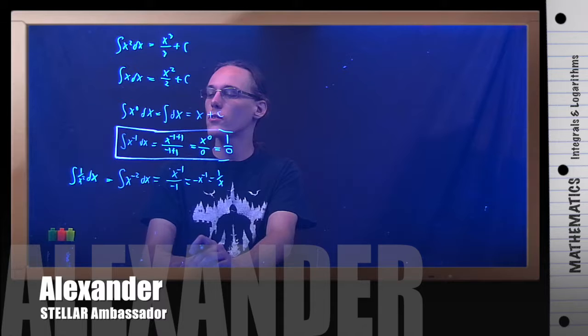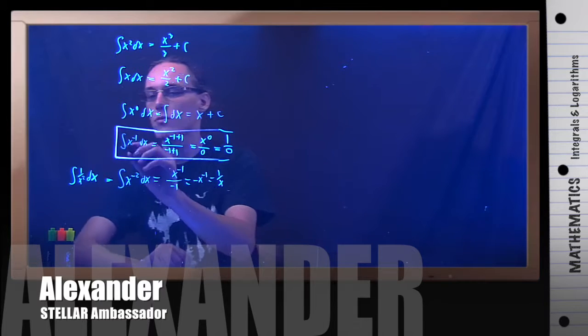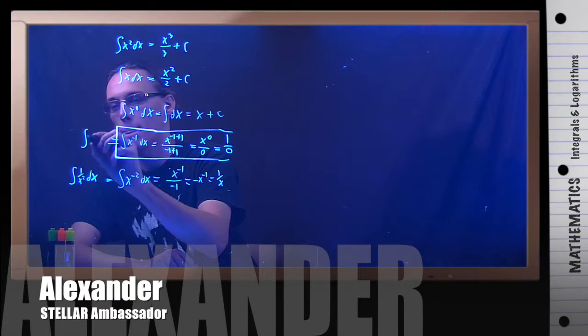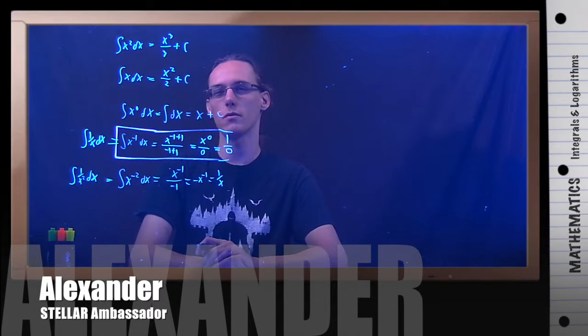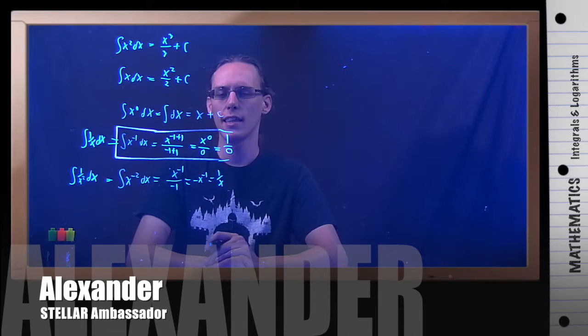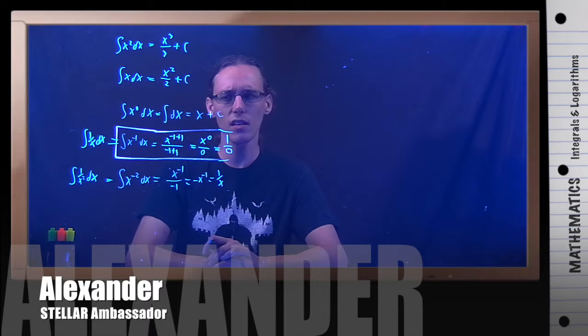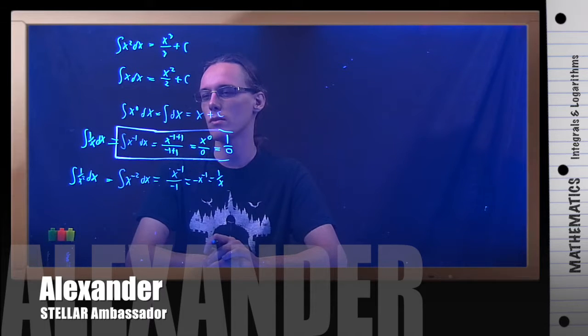So apparently the integral of 1 over x, remember that's what x to the negative 1 means, is 1 over 0. That doesn't seem right though. Seems like we should be able to get the integral for most things, right?